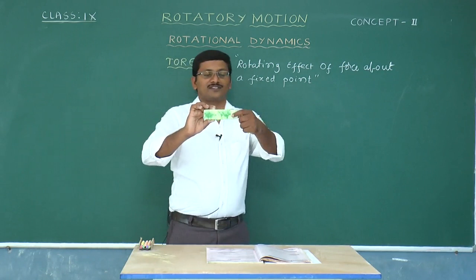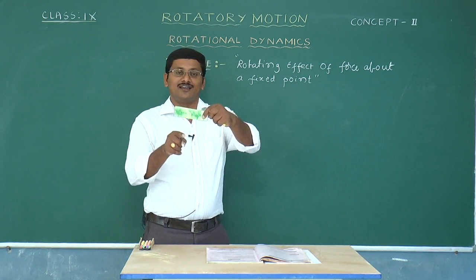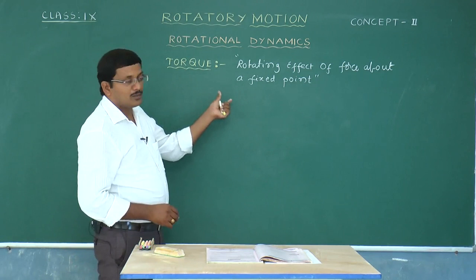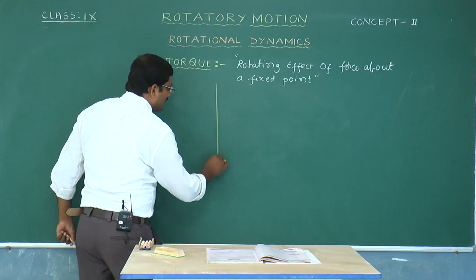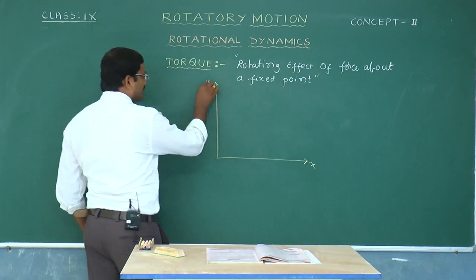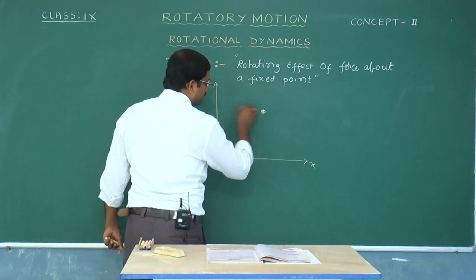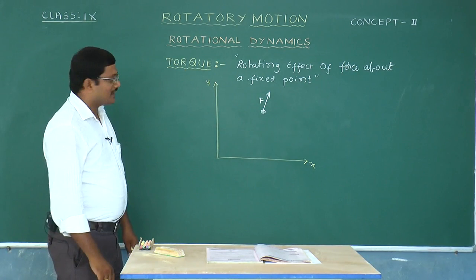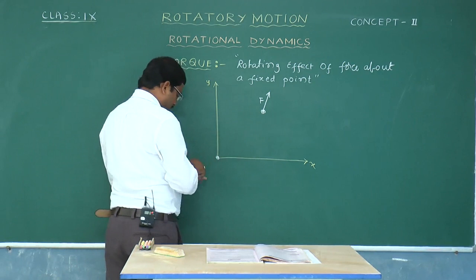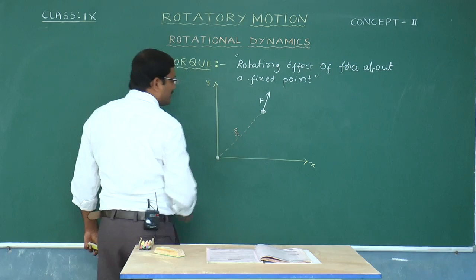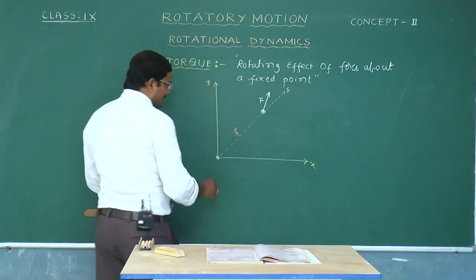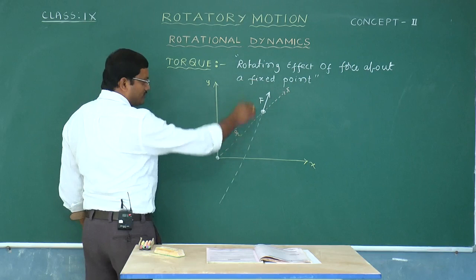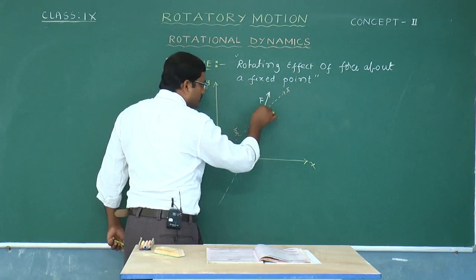Let us consider the x-y plane. Consider a particle of mass m on which we apply some force. If the origin O is the reference point, the position vector r̄ connects O to the particle. If we extend r̄ and extend the force vector, that extension is called the line of action of force. The line of action of force is in one direction and the position vector is in another direction. Let the angle between them be θ.